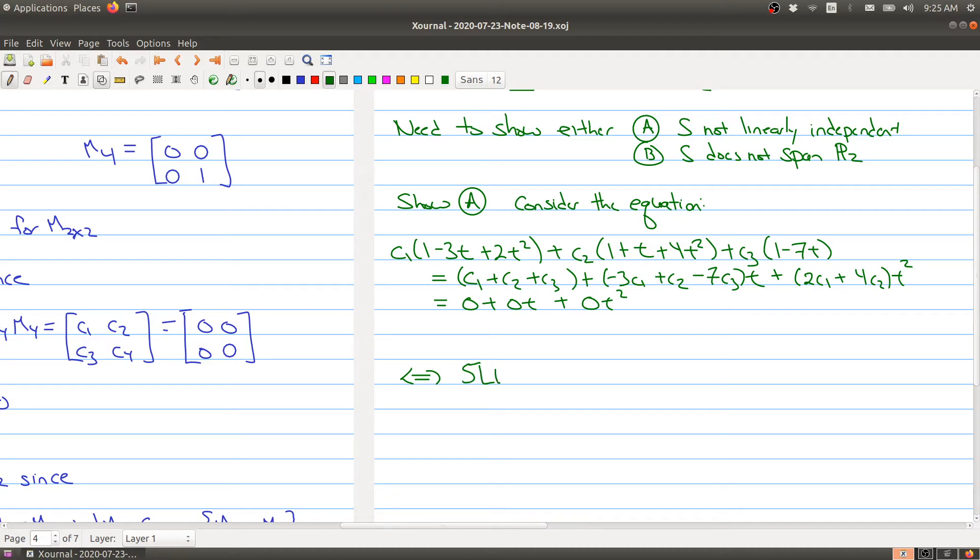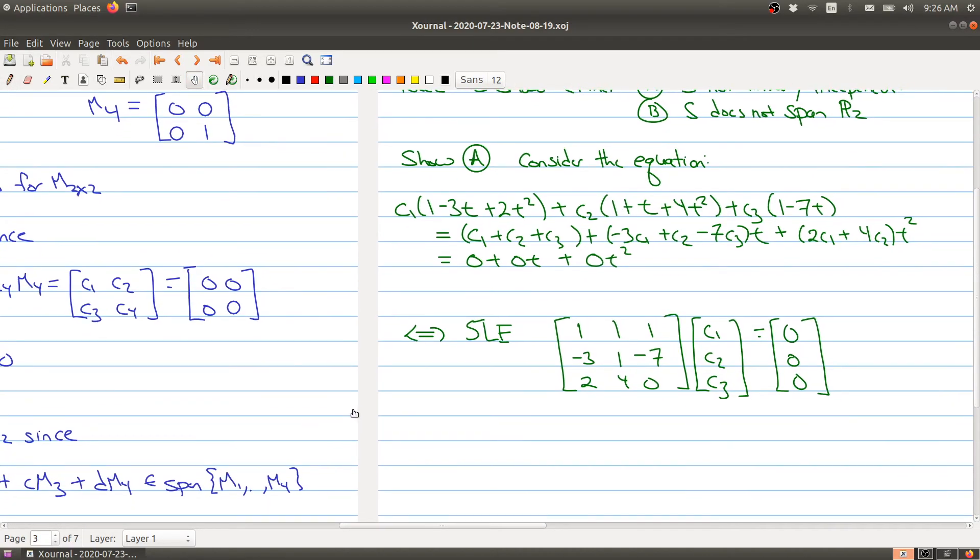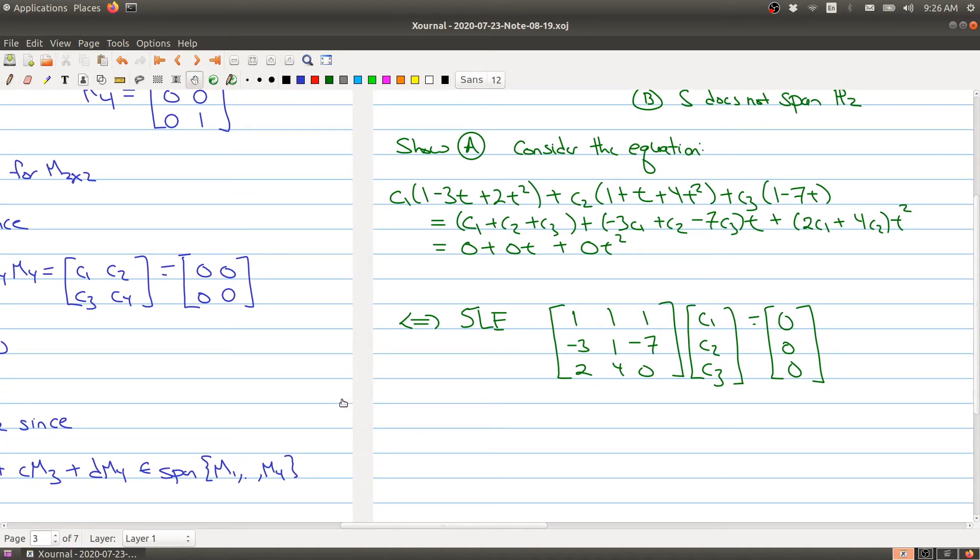Because this is equivalent to the following system of linear equations. We want to solve the matrix equation with [1, 1, 1; -3, 1, -7; 2, 4, 0] times [c1; c2; c3] equaling [0; 0; 0]. So we want to be able to solve this. Now, we're asking more of an existence question. We don't care what the actual solutions are. We just care about whether there is one solution or infinite number of solutions.